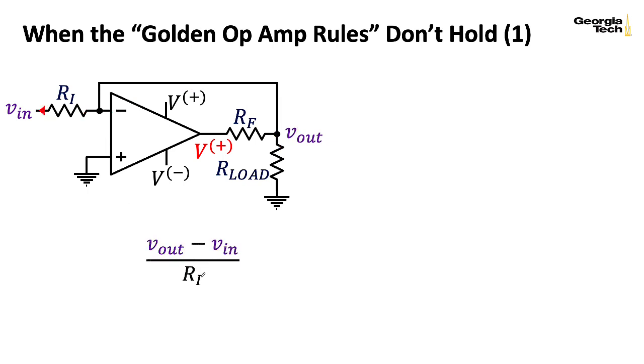I have Vout minus Vn divided by RI, and then flowing through RF, that would be Vout minus the positive supply voltage here that we're locking the output to, divided by RF. And now we do need to include the fact that there is a current flowing out through the load resistor, so that's Vout minus zero.